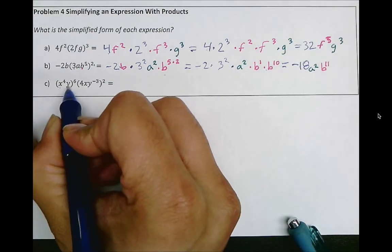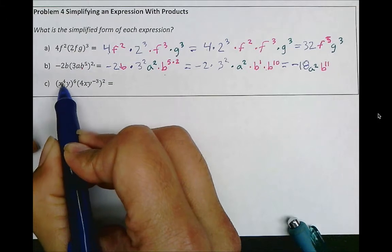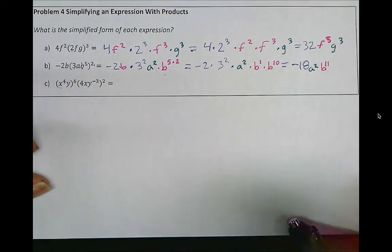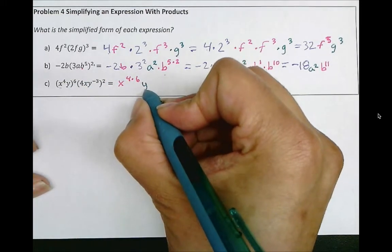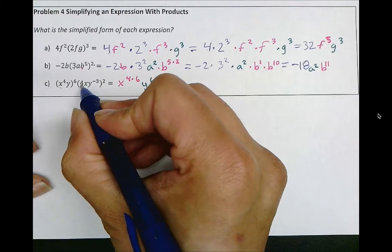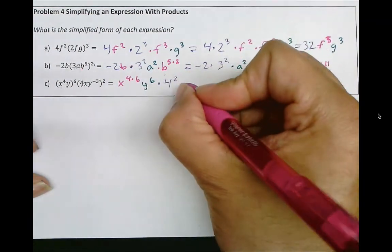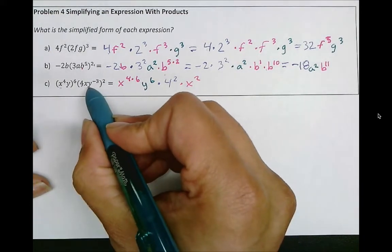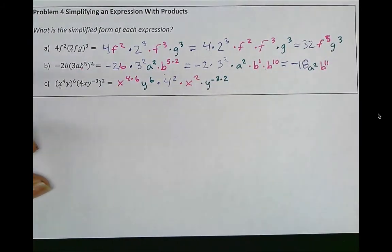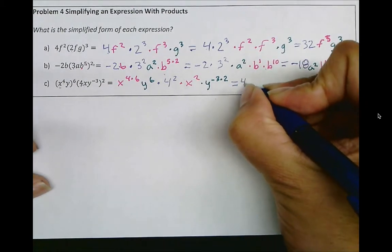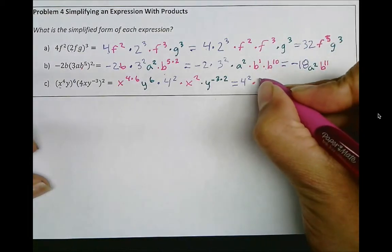And lastly, we have this product being raised to the power of 6, and this product being raised to the power of 2. So now, x to the power of 4 to the power of 6, we can write as x to the power of 4 times 6. And next, we have y to the power of 6. Then we have the 4 raised to the power of 2, so times 4 raised to the power of 2, and x raised to the power of 2. Let's start by rearranging these as 4 to the power of 2 times x to the power of 4 times 6, which is x to the power of 24.